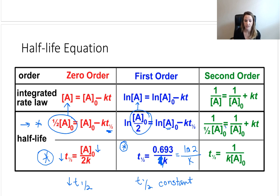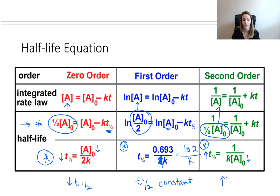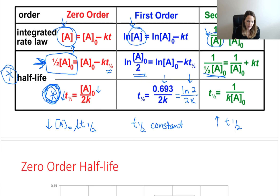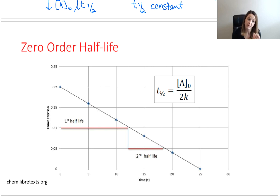For second order, we again take one-half A-naught and substitute it in. After algebra we get another half-life expression, and this is basically the opposite relationship from zero order. Here, as our original concentration of reactant decreases, our half-life actually increases. So if the first half-life is a minute, the second is two minutes, then four minutes, then eight minutes. For those who prefer visuals, there are graphs that plot this out for each order.